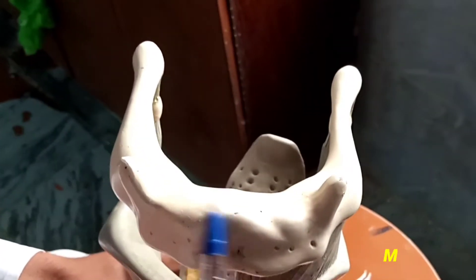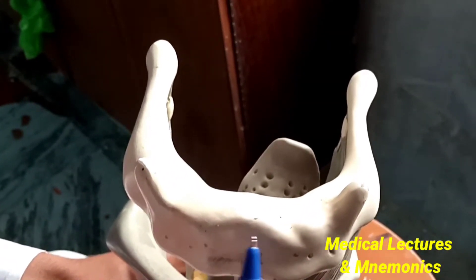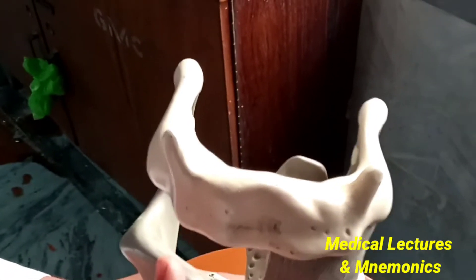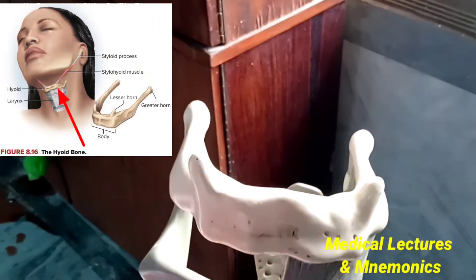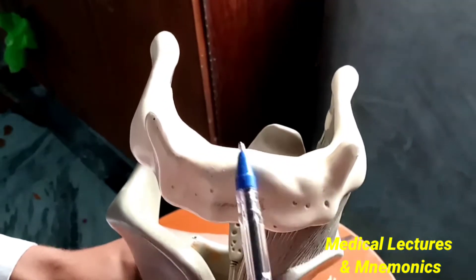Friends, today I'm going to talk about the hyoid bone and its anatomy. The hyoid bone is present between the larynx and the mandible, and it is a unique bone that does not articulate with any other bone.